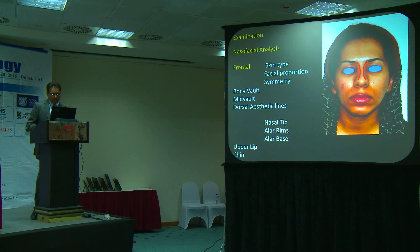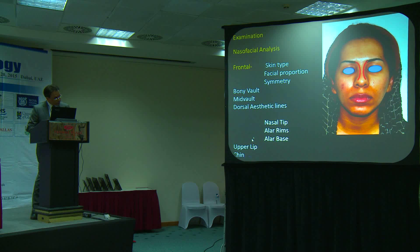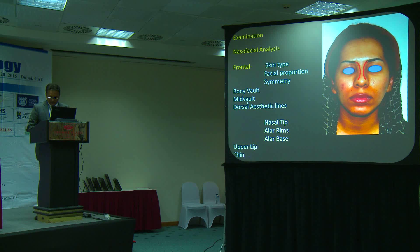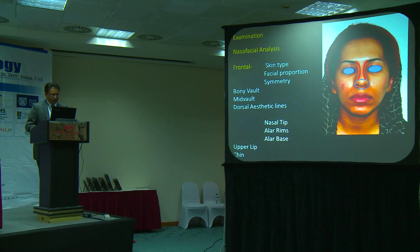The most important thing is the analysis of the patient, and this is what helps us give them a good, natural result. A typical analysis begins with a naso-facial analysis in the frontal position, understanding the skin type and facial proportion, because we see a different community of patients coming with different needs and desires. The sequence of assessment covers the bony vault, the middle vault, and the dorsal aesthetic lines, then the tip area, the lower lateral (LR) rims and LR base, and finally the relations of the lip and chin.